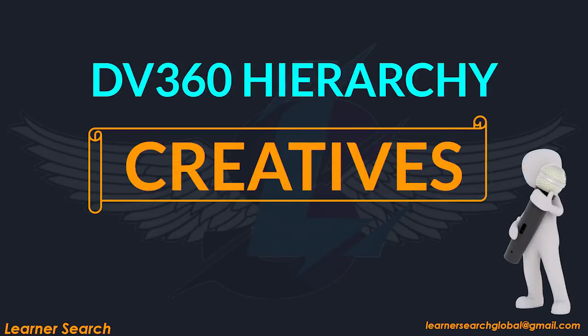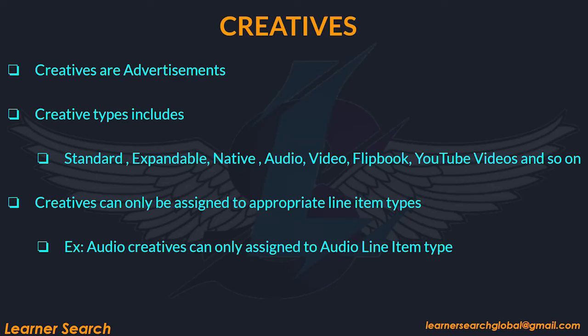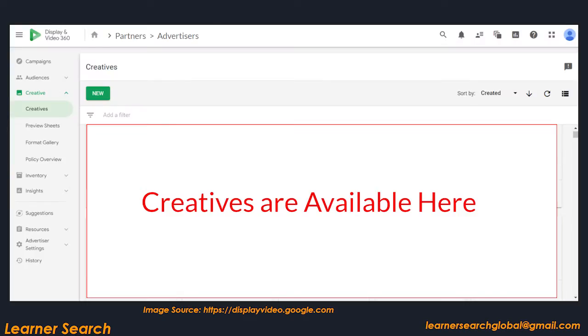Creatives are nothing but advertisements which are assigned to the line items. Creative types include standard, expandable, native, audio, video, flipbook, YouTube videos, and so on. Creatives can only be assigned to appropriate line items. For example, audio creatives can only be assigned to an audio line item type. This slide shows creatives available at the advertiser level.